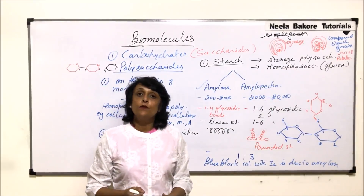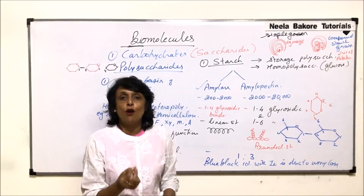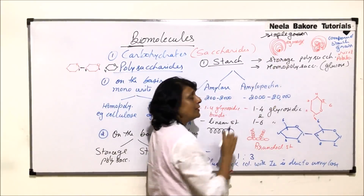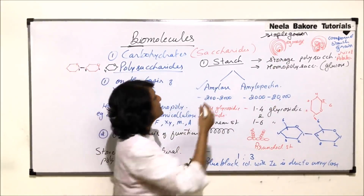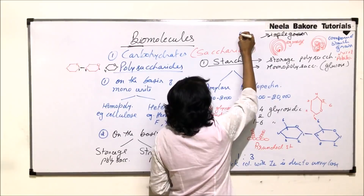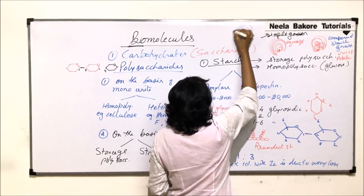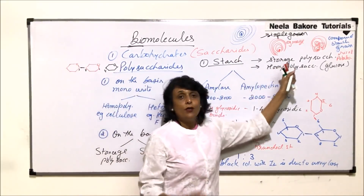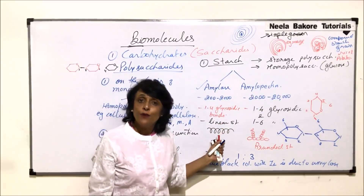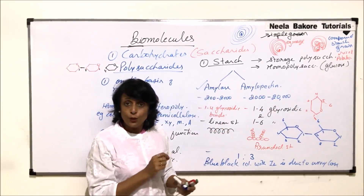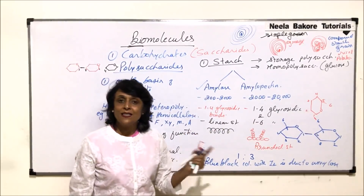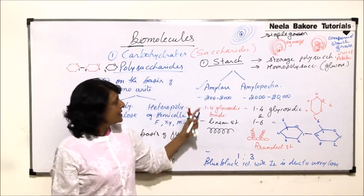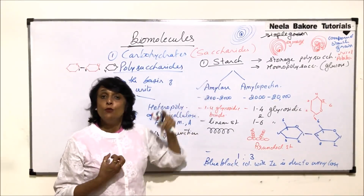Simple grains can be of two types depending on the position of the hilum: concentric or eccentric. If the hilum is in the center with starch layers surrounding it evenly, it is a concentric simple starch grain. Depending upon hilum number and position, we can classify starch grains as simple or compound, and concentric or eccentric. Starch is the main carbohydrate which is stored.